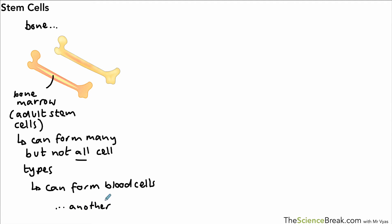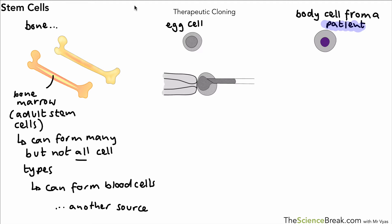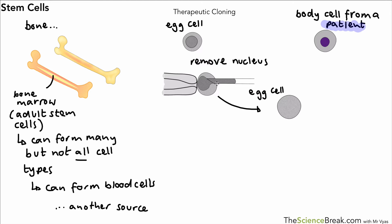There is yet another possibility for making stem cells to cure conditions, called therapeutic cloning. Here's how it works: we have an egg cell and a body cell from the patient we want to treat. The egg cell has its nucleus, and there's the body cell from the patient. What we do is remove the nucleus from the egg cell - literally done using a tiny syringe to draw out the nucleus - leaving an empty egg cell that doesn't have to be from the patient.